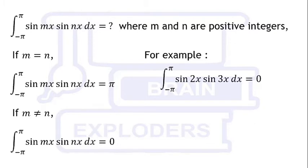You can check it. For example, the integration from -π to +π of sin(2x)sin(3x)dx is 0, and the integration from -π to +π of sin(3x)sin(3x)dx, or sin²(3x)dx, is π.